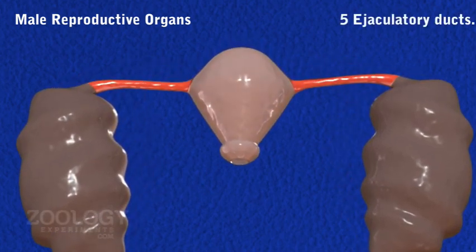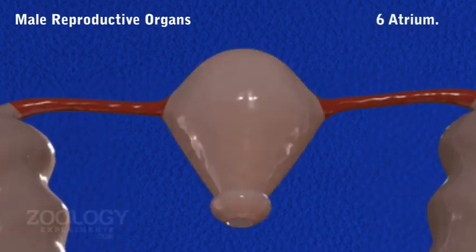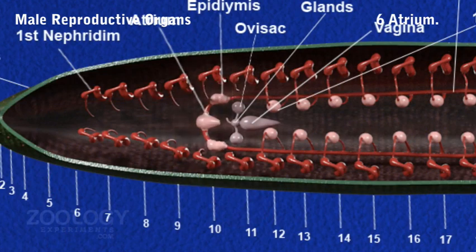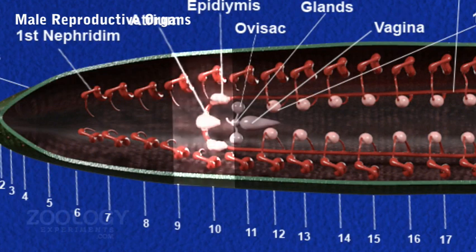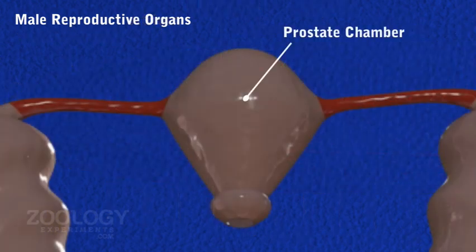Ejaculatory ducts: From the anterior and inner end of each epididymis arises a short and narrow ejaculatory duct. Atrium: Ejaculatory ducts of both sides join a median piriform sac called the atrium, which extends into the 9th and 10th segments, opening outside by the male genital pore. The atrium consists of two parts: a vase-like broad anterior prostate chamber and a neck-like narrow posteriorly directed penis sac.